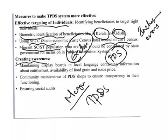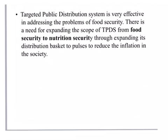For creating awareness, maintaining display boards in local language containing information about entitlements and availability of food grains is recommended. Community maintenance of PDS shops ensures transparency and accountability — when the community manages PDS shops they will not allow ghost beneficiaries to take benefits, since the benefits are meant for people who are really poor. Ensuring social audits is another important measure.